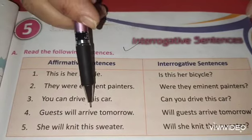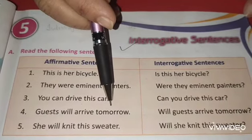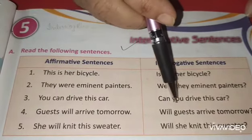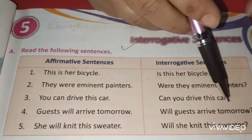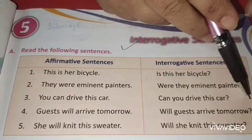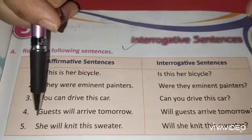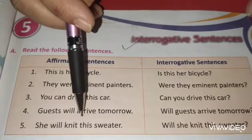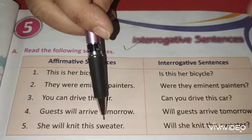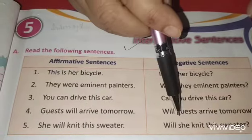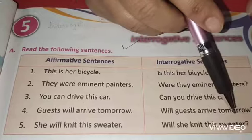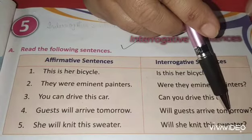Number 4: Guest will arrive tomorrow. → Will guest arrive tomorrow? Number 5: She will knit this sweater. → Will she knit this sweater? Question mark.